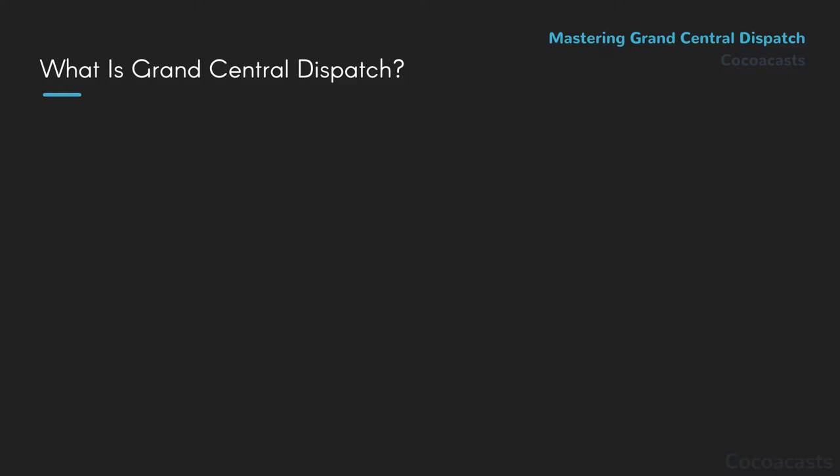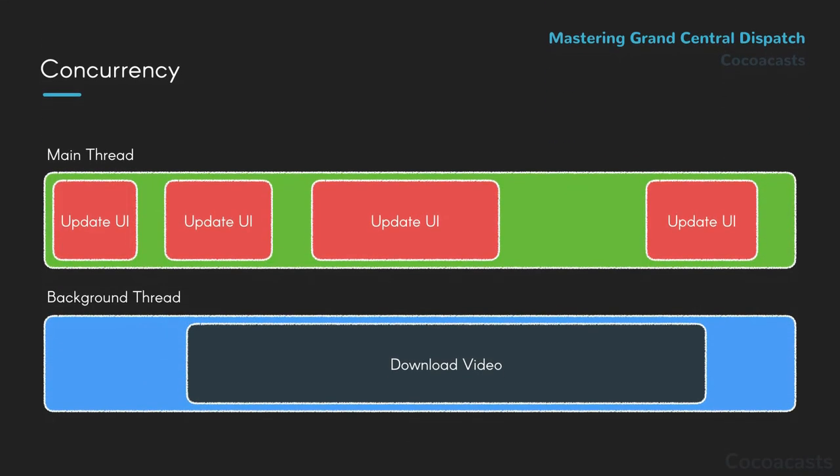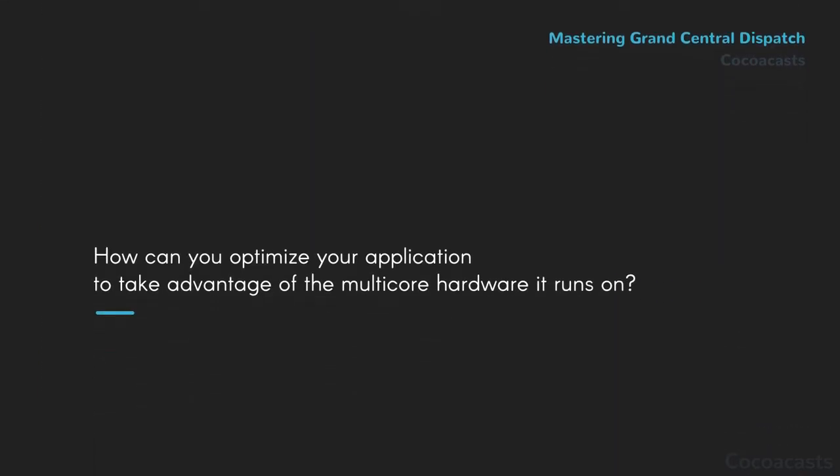Most modern computing devices are powered by capable multi-core processors. The availability of multiple cores allows these devices to execute work concurrently — that is, at the same time. That enables your phone to download video in the background while keeping the user interface responsive. Most applications support a wide range of devices. How can you optimize your application to take advantage of the multi-core hardware it runs on? That's where Grand Central Dispatch comes into play.